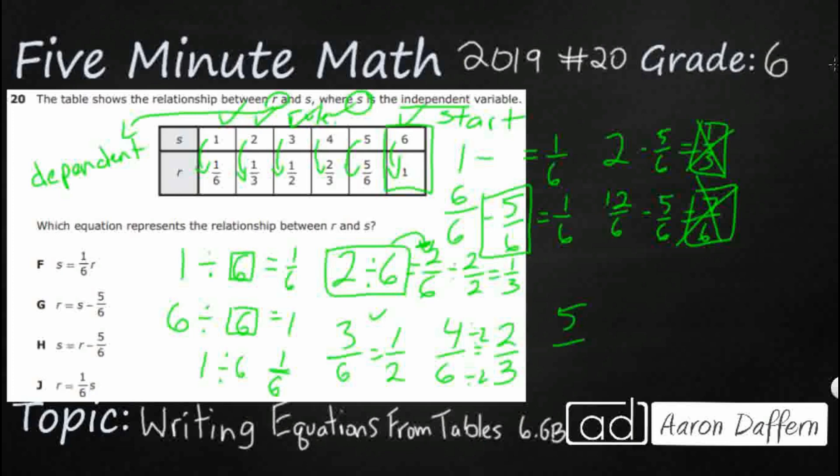And then finally, five divided by six. Yeah, guess what? That equals five sixths. So our answer is going to be, we take our s, we divide it by six, and we get r.